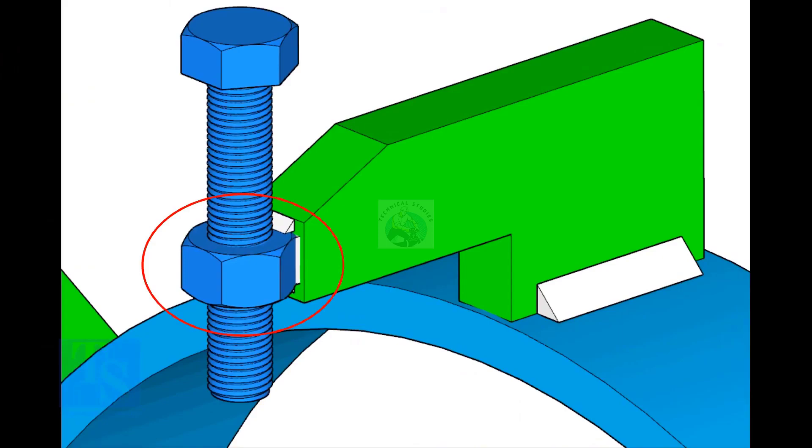The nut shall be welded with the L-clamp from all around. This welding shall be a minimum of 5 millimeters on both sides.